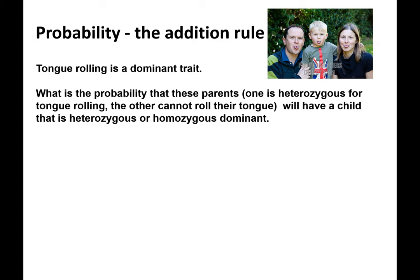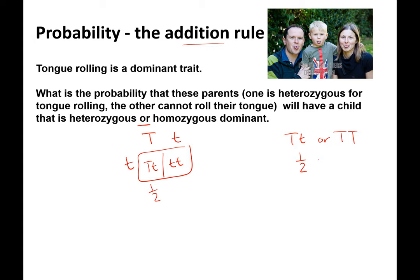For the addition rule, using the same parents and Punnett square but a different question: what's the probability they will have a child that is heterozygous or homozygous dominant? Since this uses 'or,' we add. The chance of heterozygous is ½; the chance of homozygous dominant is zero (not possible with these parents). So they have a ½ chance of having a child that is heterozygous or homozygous dominant.